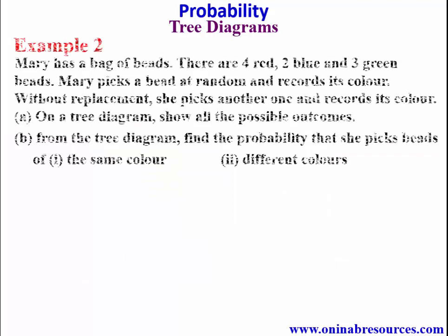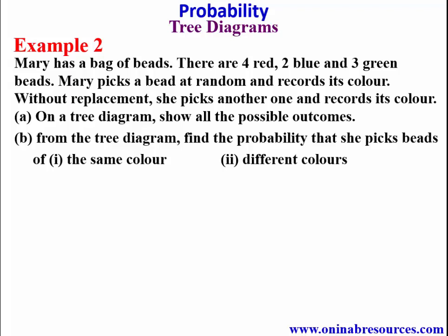We go to Example 2. Mary has a bag of beads. There are 4 red, 2 blue, and 3 green beads. Mary picks a bead at random and records its color. Without replacement, she picks another one and records its color. A: on a tree diagram, show all the possible outcomes. B: from the tree diagram, find the probability that she picks beads of 1) the same color, 2) different colors.